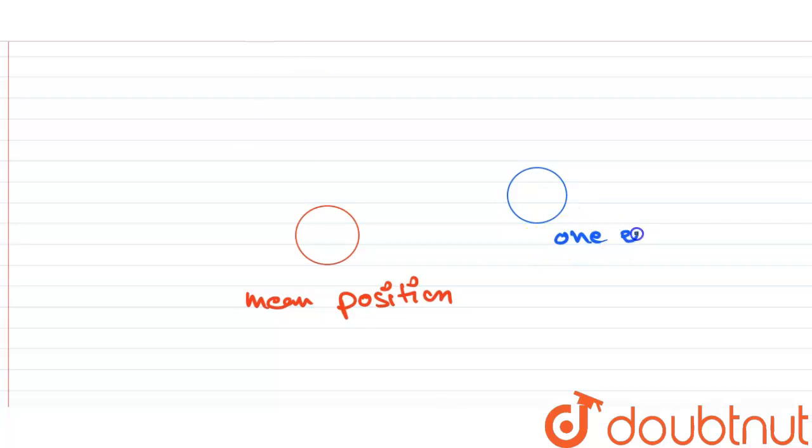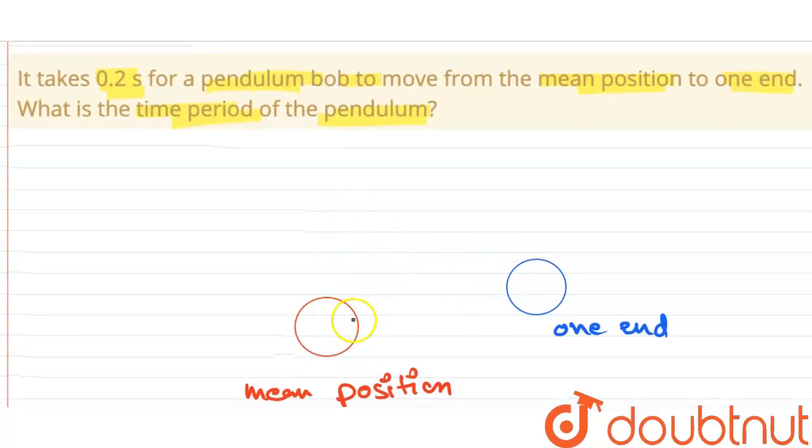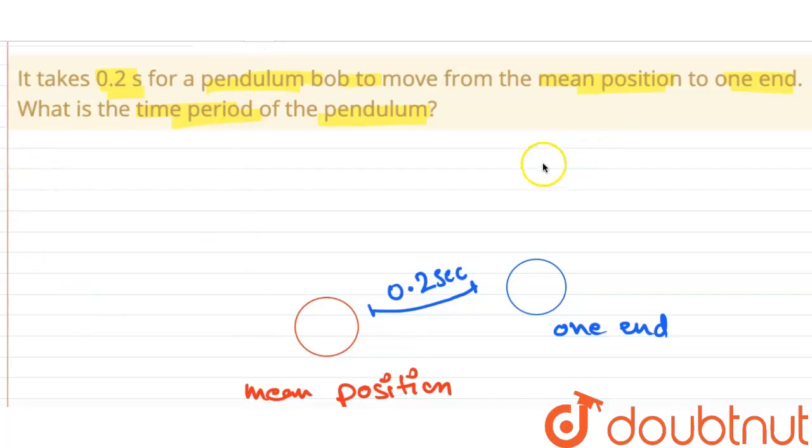Now it takes 0.2 seconds to travel from the mean position to one end. To complete one oscillation, what will be the path of the bob?